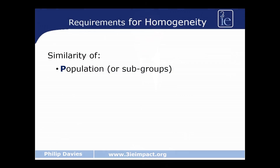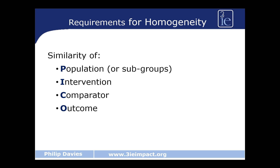In order to do this we have to test for what we call homogeneity. We do this by seeing how similar all the studies are in terms of the population or subgroups covered, the interventions being investigated, the comparators with which they're making a comparison, and the outcomes that are being addressed. In addition, we also check to see whether there are overlapping confidence intervals, which you will see when we move to the next slide.